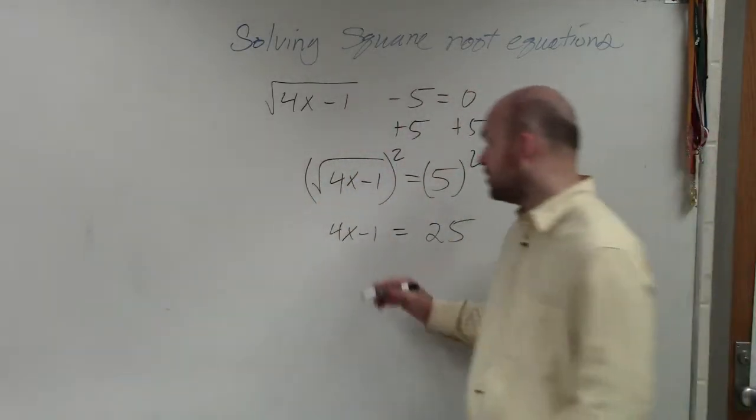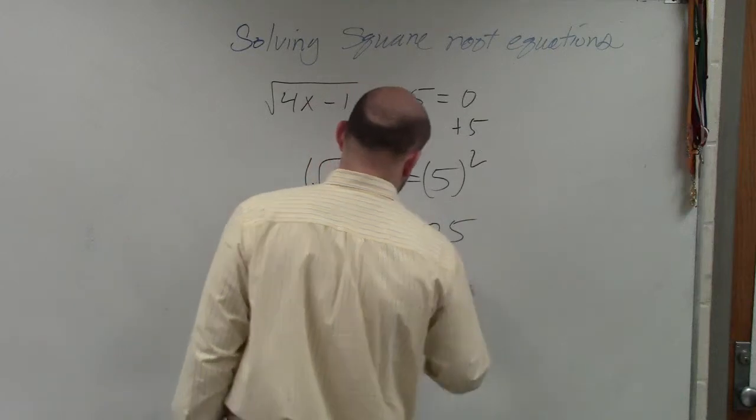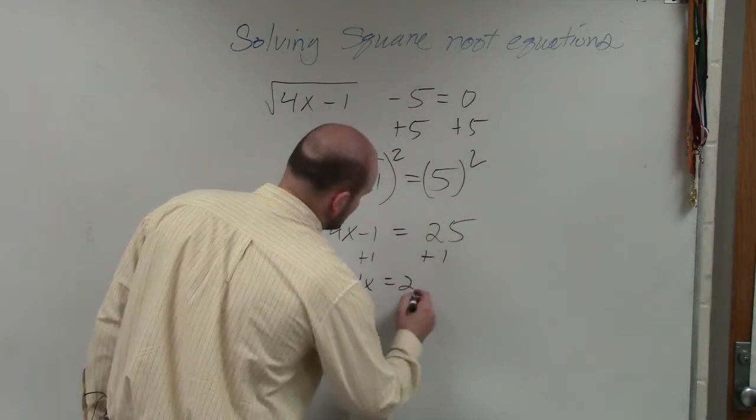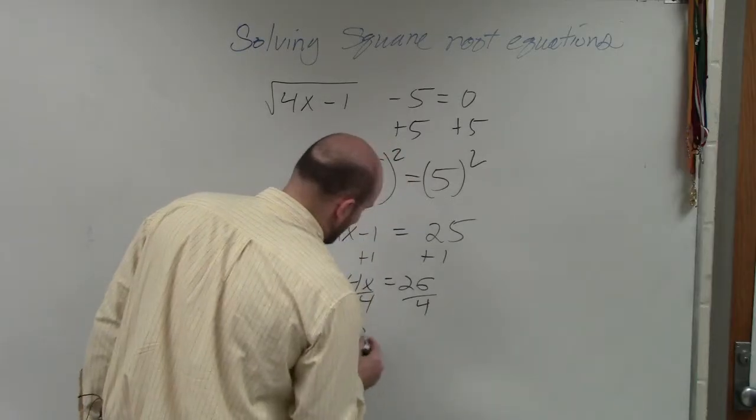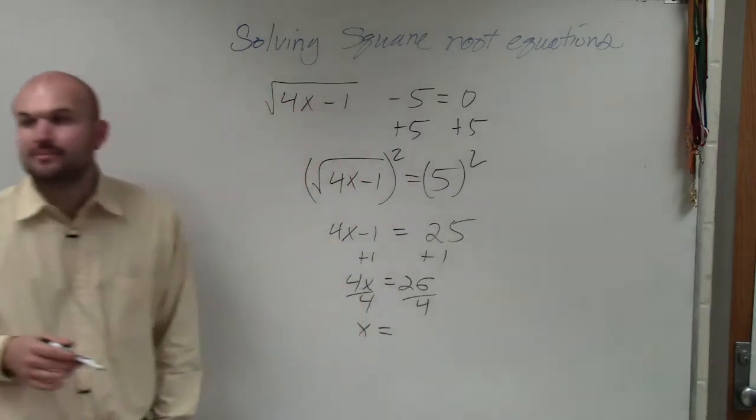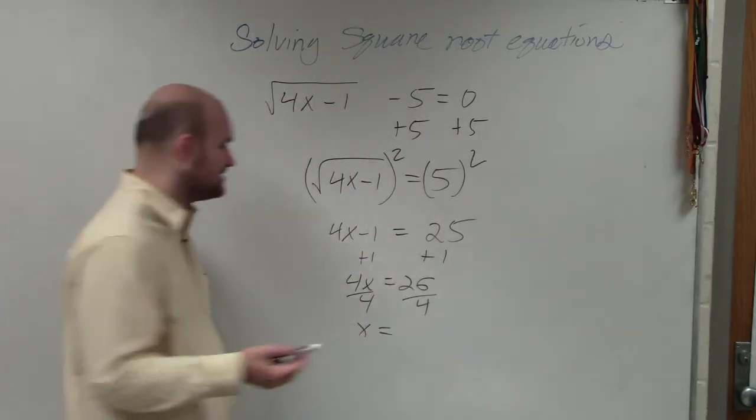Now, when I go ahead and solve, I'm going to add 1. I get 4x equals 26, divide by 4. x equals, now I'm going to redo this. You could keep it as a decimal.